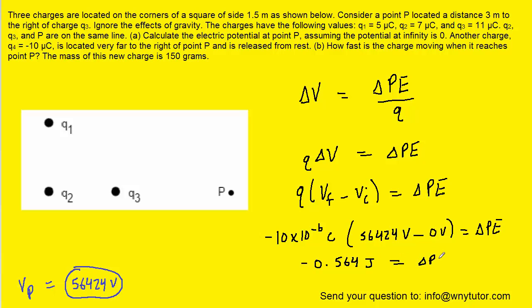Now, the negative sign indicates that this particle, Q4, has lost potential energy. And of course, energy conservation tells us that energy cannot just disappear. It has to be transformed into another form of energy. And so what's happening is, as this charge is losing electrical potential energy, it is gaining kinetic energy. So we're going to set the magnitude of this energy equal to kinetic energy.